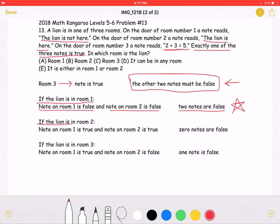If the lion is in room 2, the note on room 1 is true, and the note on room 2 is also true. This would make zero notes false. However, we know that two notes must be false. So the lion is not in room 2.